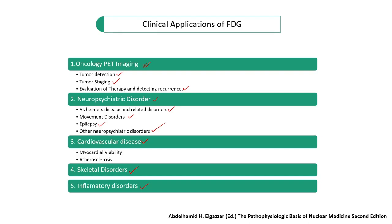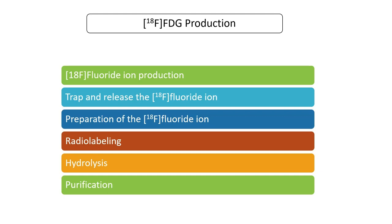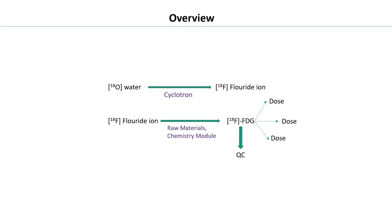We can divide FDG production into six steps: first, F-18 fluoride ion production; second, trap and release of the fluoride ion; third, preparation of the fluoride ion; fourth, radiolabeling; fifth, hydrolysis; and sixth, purification. We will talk about each step in detail.